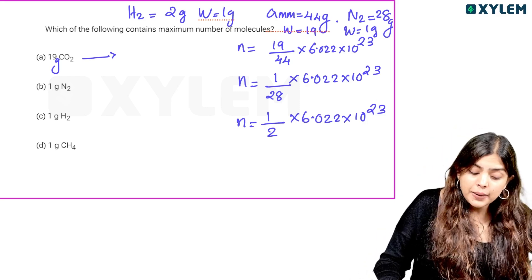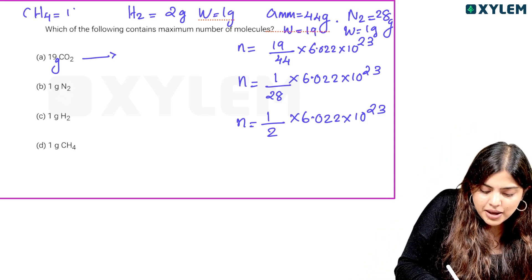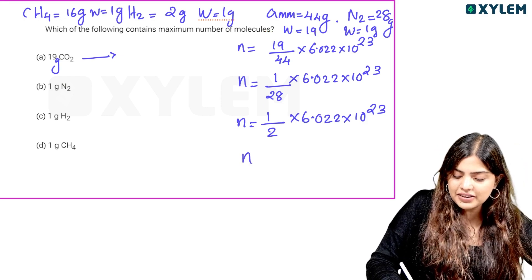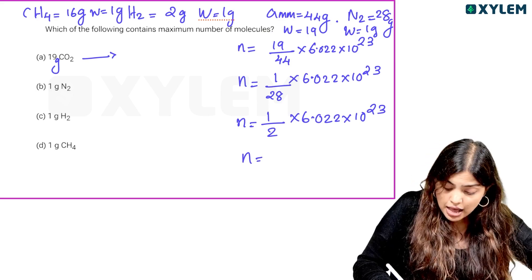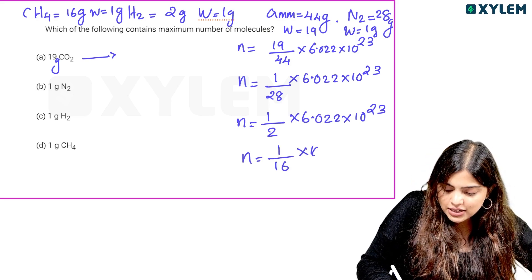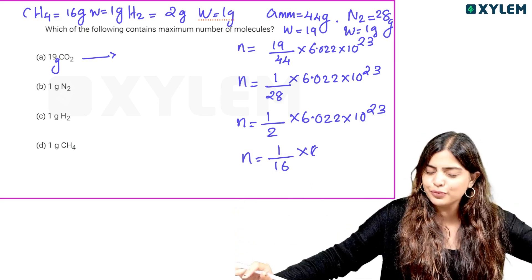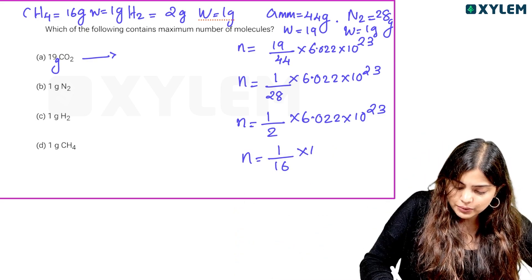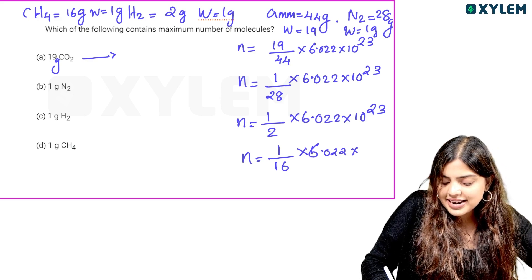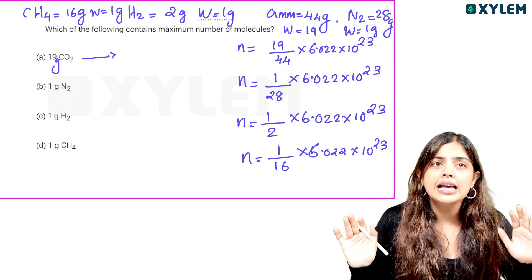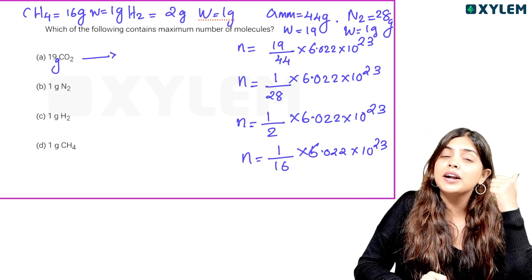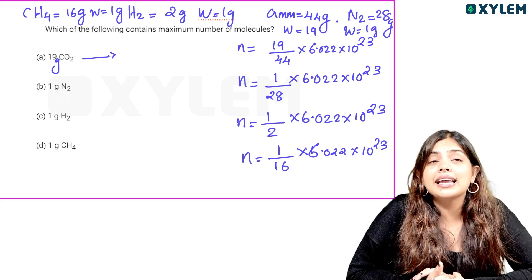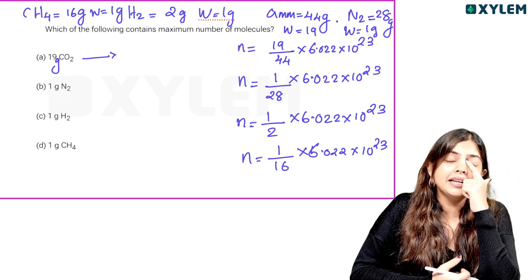For methane (CH4): gram molecular mass is 16 grams. The number of moles = given mass divided by 16. The number of molecules = (1/16) × 6.022 × 10²³. Comparing the fractions: 11/44, 1/28, 1/2, 1/16 — the largest fraction is 1/2, so H2 has the maximum number of molecules.